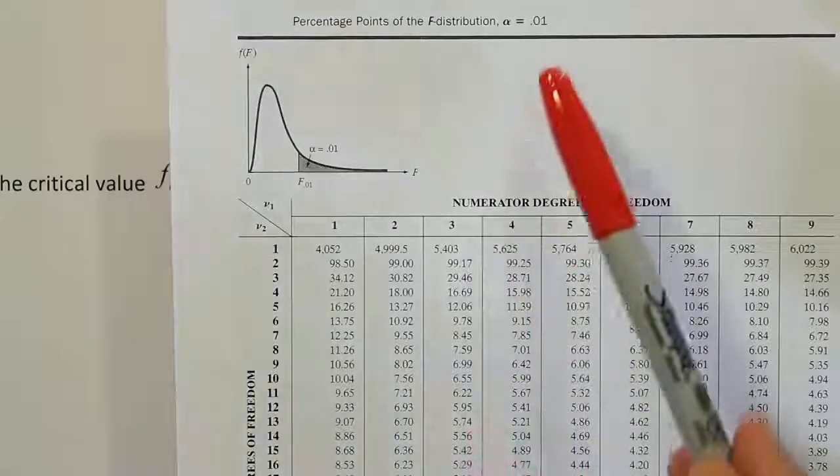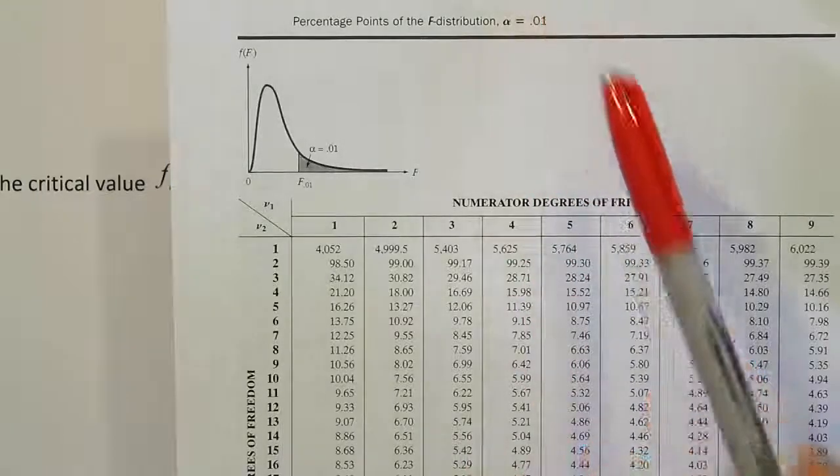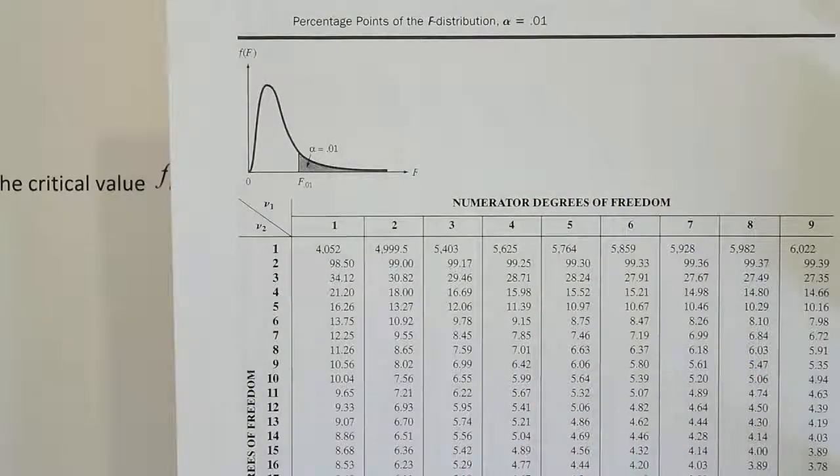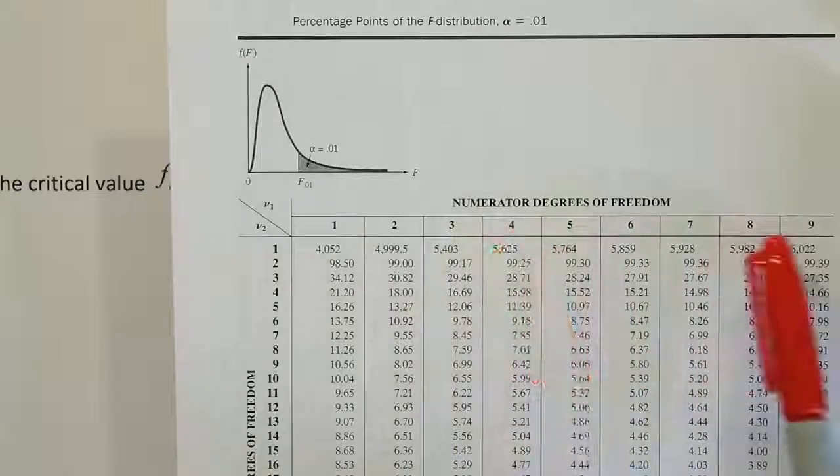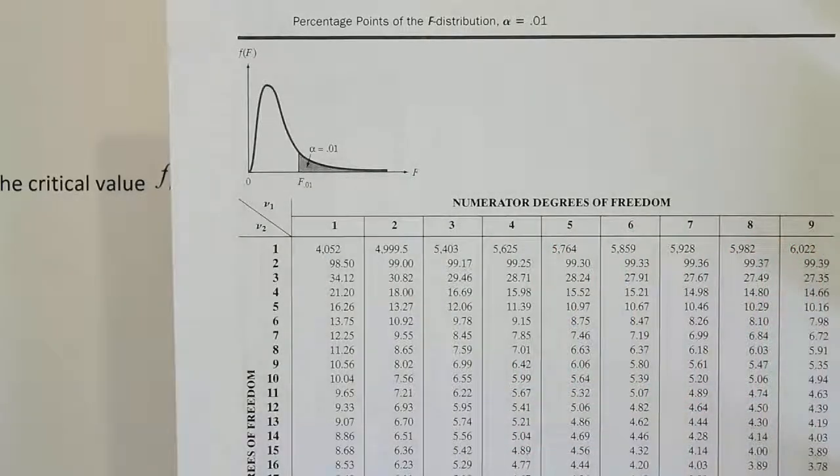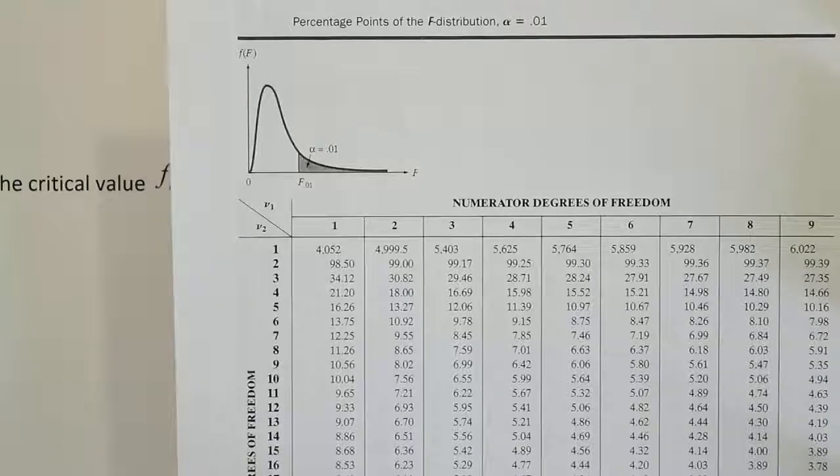Okay, so we're at our 0.01 table and we're looking for numerator degrees of freedom 30. Well, I don't see that here because the numerator degrees of freedom on the first page only goes up to 9. So we have to go to the second page now.